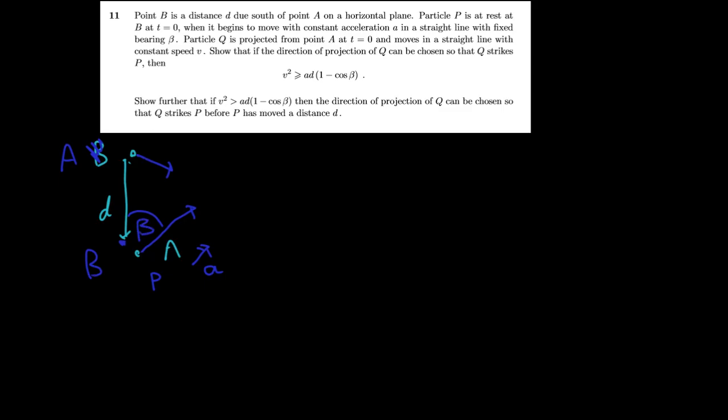Now we're told particle Q has constant speed V, so it's shot off at constant speed, there's no acceleration there. And we're going to consider that there's a collision. Suppose that there's a collision. And then we have to show that if a collision is possible, there's an inequality that's satisfied considering beta.